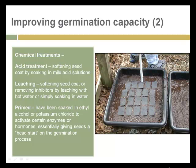Chemical treatments through acid can soften the seed coat. Leaching of nutrients through soils can also soften the seed coat. Sometimes seeds need to be primed by exposure to certain chemicals, giving them a head start in the germination process. These are all manipulations that can be performed in horticultural settings.